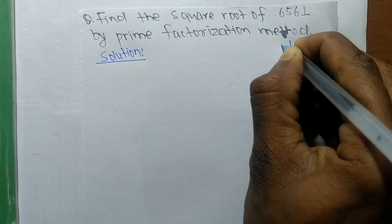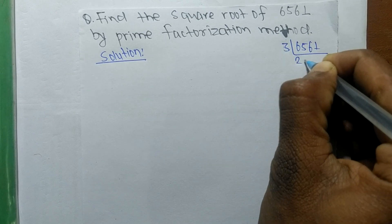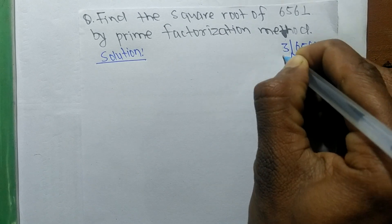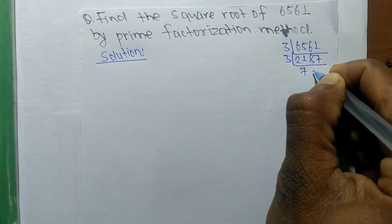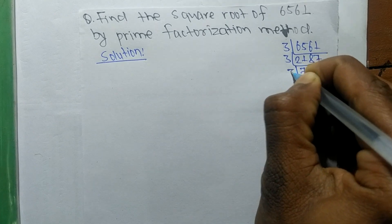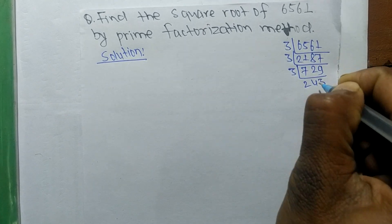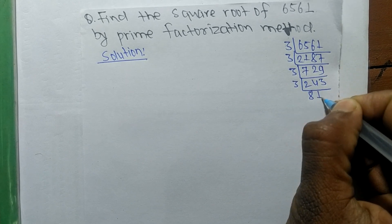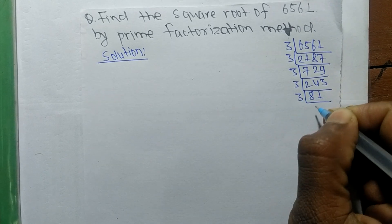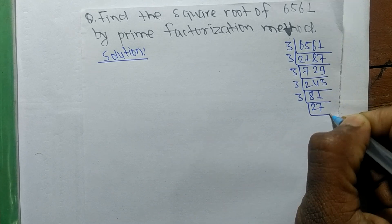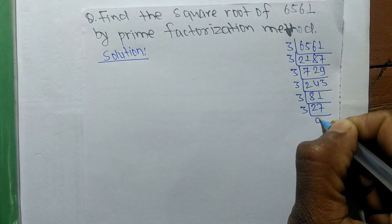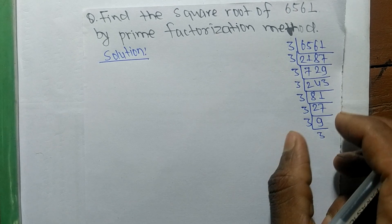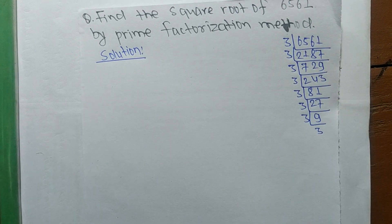We divide 6561 by 3 to get 2187, then 2187 by 3 to get 729, then 729 by 3 to get 243, then 243 by 3 to get 81, then 81 by 3 to get 27, then 27 by 3 to get 9, and 9 by 3 to get 3, and finally 3 by 3 to get 1. So we have found all the prime factors.